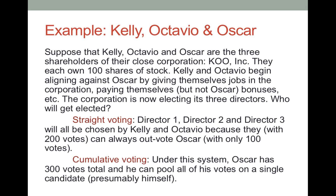Let's suppose we have Kelly, Octavio, and Oscar. They are the three shareholders of a close corporation called Coup Inc. They each own 100 shares of stock. Kelly and Octavio have been aligning against Oscar, so Oscar is sort of being frozen out. Kelly and Octavio have been giving themselves jobs in the corporation, paying themselves bonuses, but no bonus for Oscar.